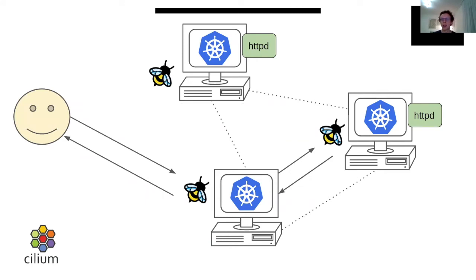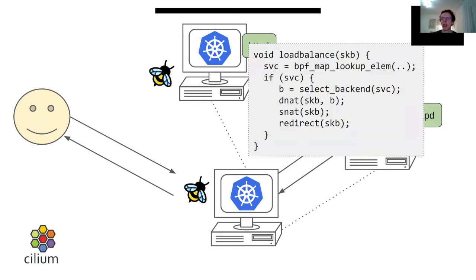Cilium, which is a Kubernetes networking and security plugin, can install eBPF and XDP programs to each Kubernetes node. And this is a simplified version of the load balancing program. So instead of doing a long list traversal of IP tables rules, the program does a single hash table lookup in order to select the service and to select its endpoint.